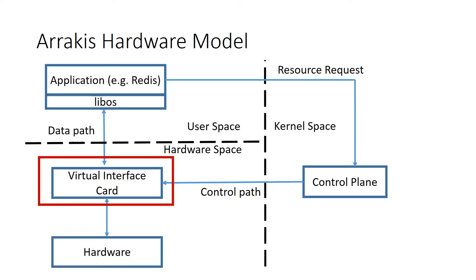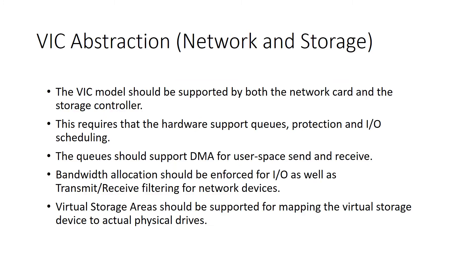Going back to the Arrakis hardware model, I want to focus on each different new piece in turn, starting with the virtual interface card. The new abstraction needs to happen both for a network device and a storage device. This model needs to support both types of hardware. This is a more generic abstraction than just a piece of network gear or a piece of RAID — it needs to be able to look like either one, with some specific differences between them.